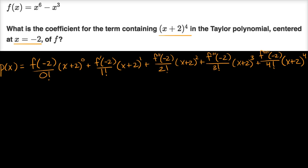So what's the coefficient here? Well, the coefficient is this business. We need to take the fourth derivative of our original function, evaluate it at negative two, and divide it by four factorial. So let's do that.